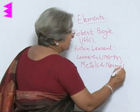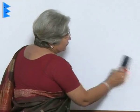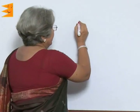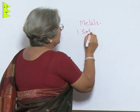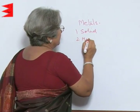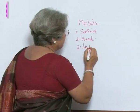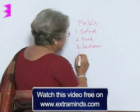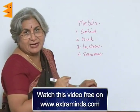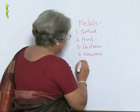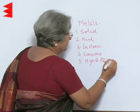Metals are generally solids at room temperature — with the exception of mercury. Metals are solid, hard, lustrous (they have a shine), and sonorous, meaning they can create a sound — that is why bells are made of metal. They have high boiling and melting points. They are malleable, meaning they can be hammered into sheets — that is why we have metal sheets. They are ductile — they can be drawn into wires, like copper wires. One gram of gold can be stretched into a very long wire.